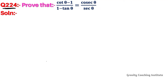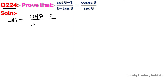Question number 224: prove that cot theta minus 1 upon 1 minus tan theta equals cosec theta by sec theta. Here, LHS is equal to cot theta minus 1 upon 1 minus tan theta.